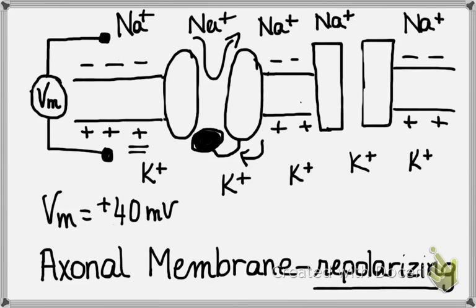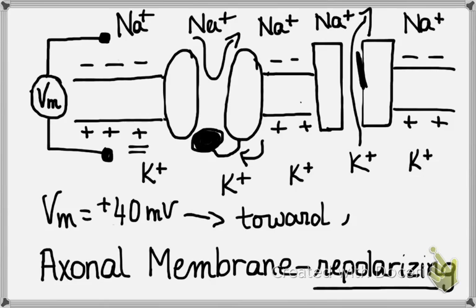Secondly, the voltage-gated potassium channel will itself open in response to this ever more positive voltage. And now, potassium, which is high in concentration inside the cell, will diffuse out down its electrochemical gradient. As the potassium diffuses out through the voltage-gated potassium channels, it carries out with it positive charges and thus the membrane potential will become more negative back towards rest. The membrane is termed to be repolarizing.